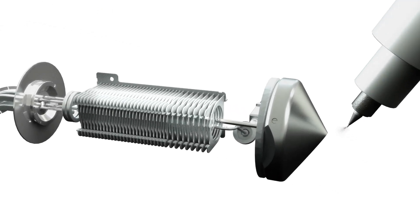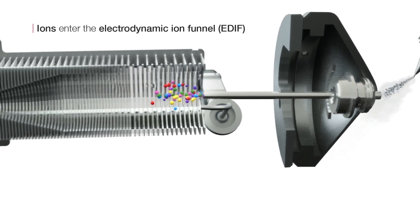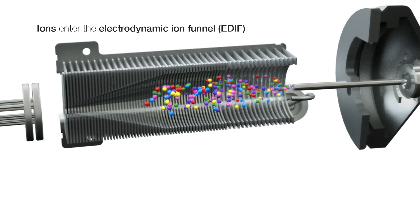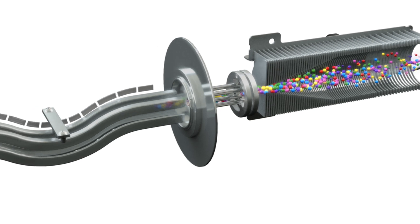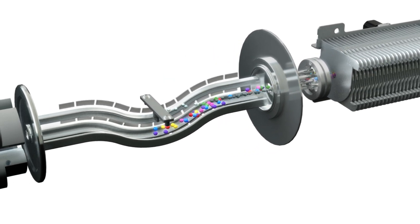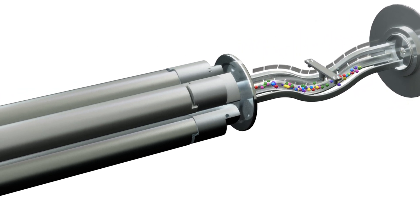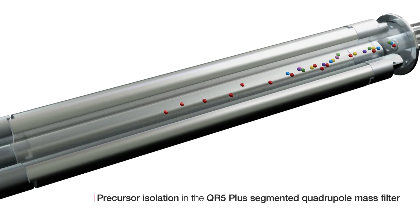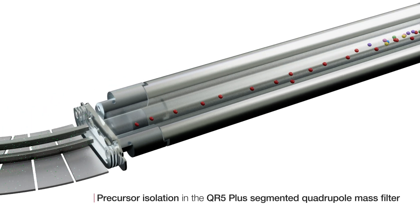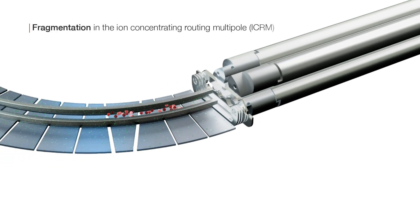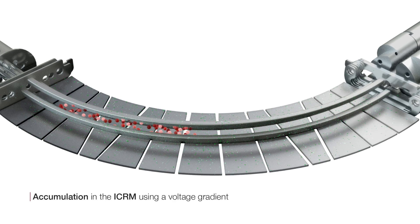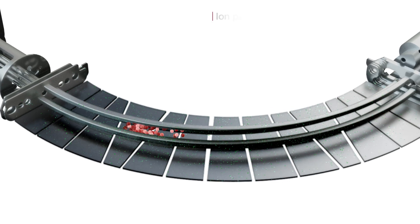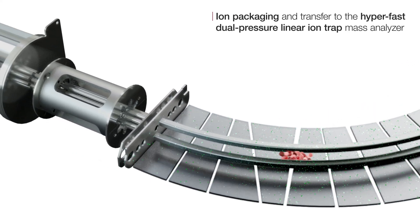For fast, sensitive, targeted MS-MS quantitation, ions move from the high-capacity transfer tube and are focused in the electrodynamic ion funnel. They then move through the advanced active beam guide and are selectively filtered in the QR5 plus quadrupole mass analyzer. In the ion concentration routing multipole, the precursor ions are fragmented and accumulated using a voltage gradient. The Stellar Mass Spectrometer's ICRM uses dynamic automatic gain control to manage accumulation times, which increases utilization rate and data quality.